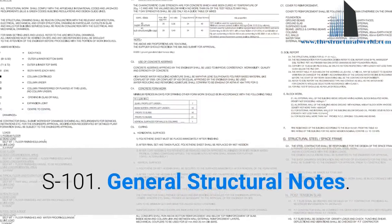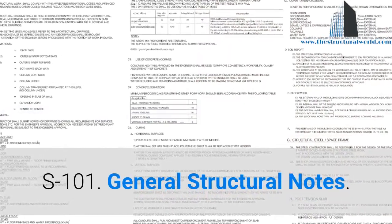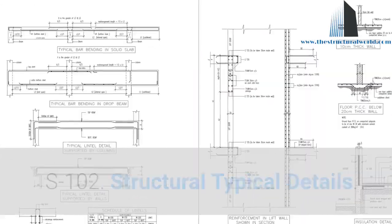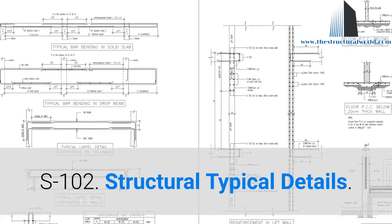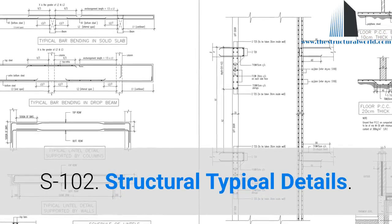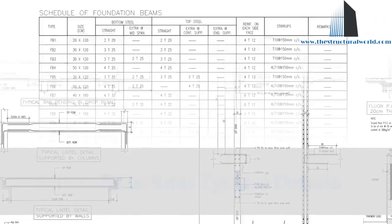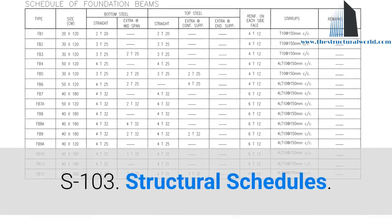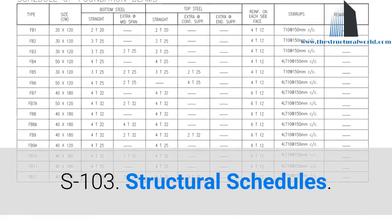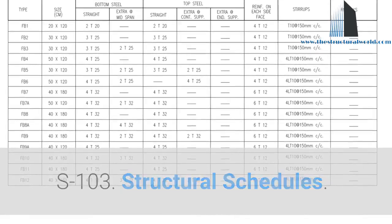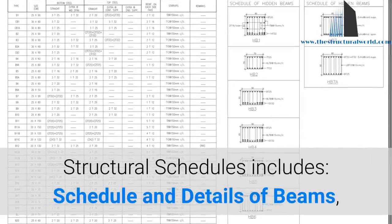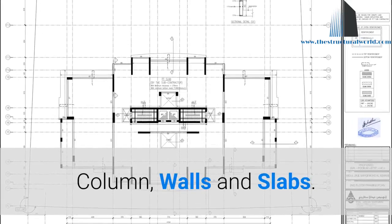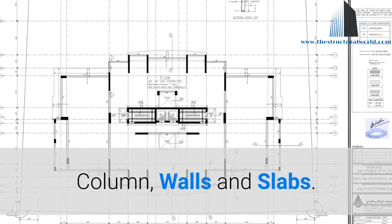S101: General structural notes. S102: Structural typical details. S103: Structural schedules. Structural schedules include schedule and details of beams, columns, walls, and slabs.